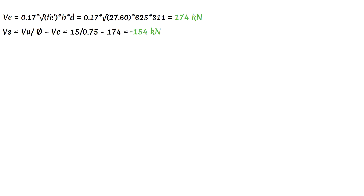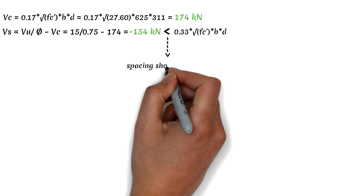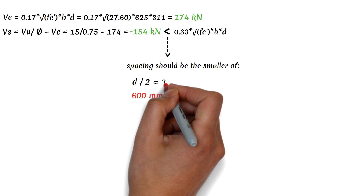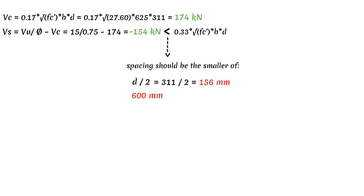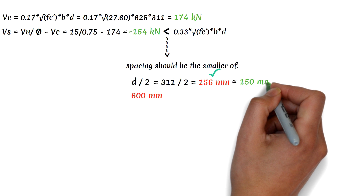Under Table 410.7.6.5.2, if Vs is less than 0.33 times the square root of FC' times width B times effective depth d, the spacing should be the smaller of d/2 and 600 mm. The effective depth d equals 375 mm minus concrete cover 40 mm minus lateral tie diameter 10 mm minus one-half the main rebar diameter, giving 311 mm. Dividing by 2 gives 156 mm. Choosing the smaller between 156 mm and 600 mm, the spacing is 156 mm, which we round down to 150 mm.